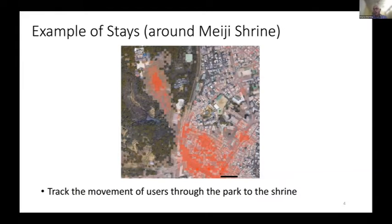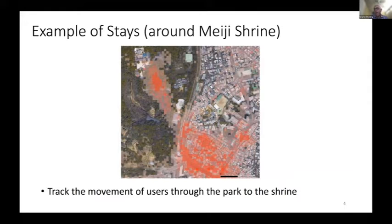Here's a brief example of the spatial resolution we have. These red squares are 25-meter by 25-meter squares, and the darkness of the red shading indicates the frequency of users. As you can see, we can map mobility within the city at a very fine level of resolution — these are people walking through a park towards a Meiji shrine in part of Tokyo.